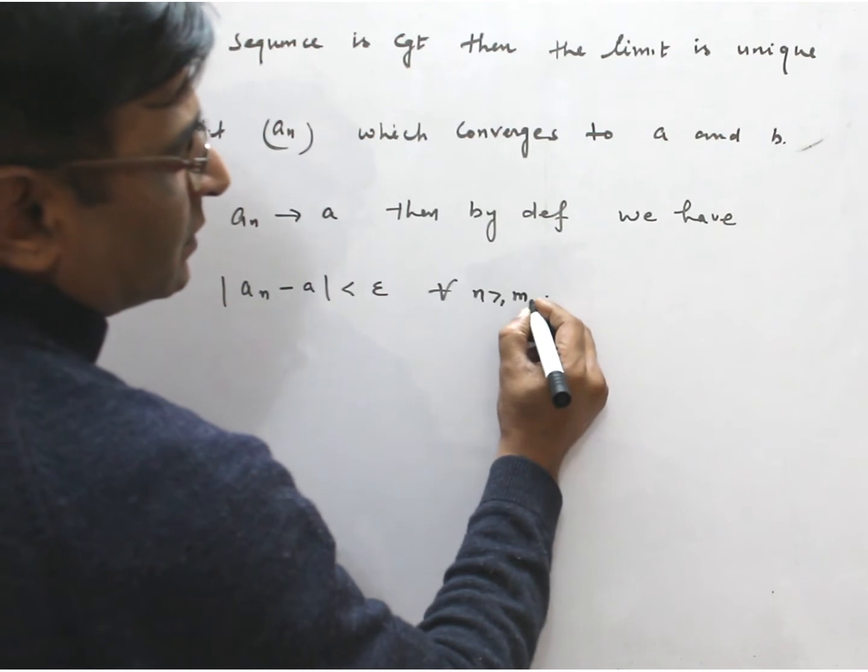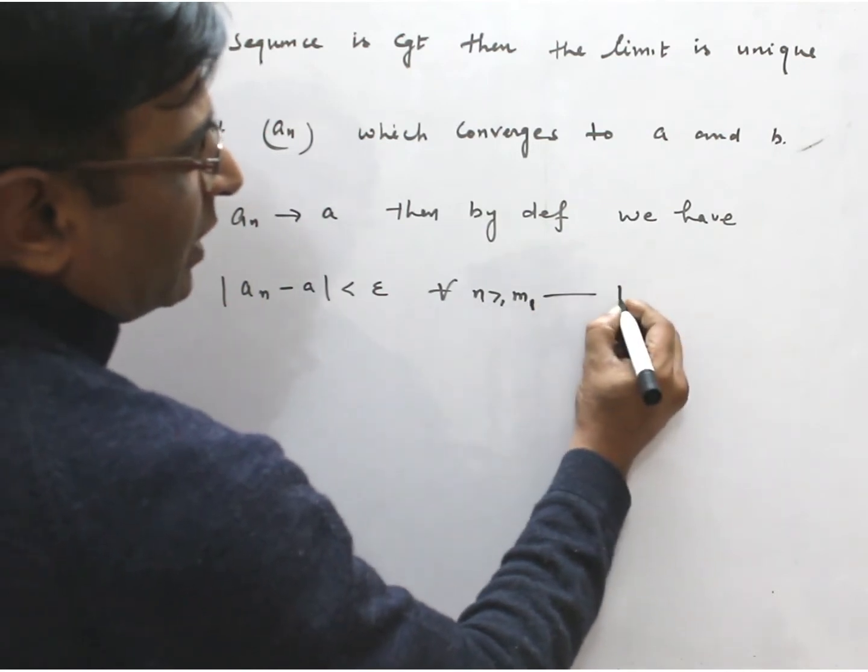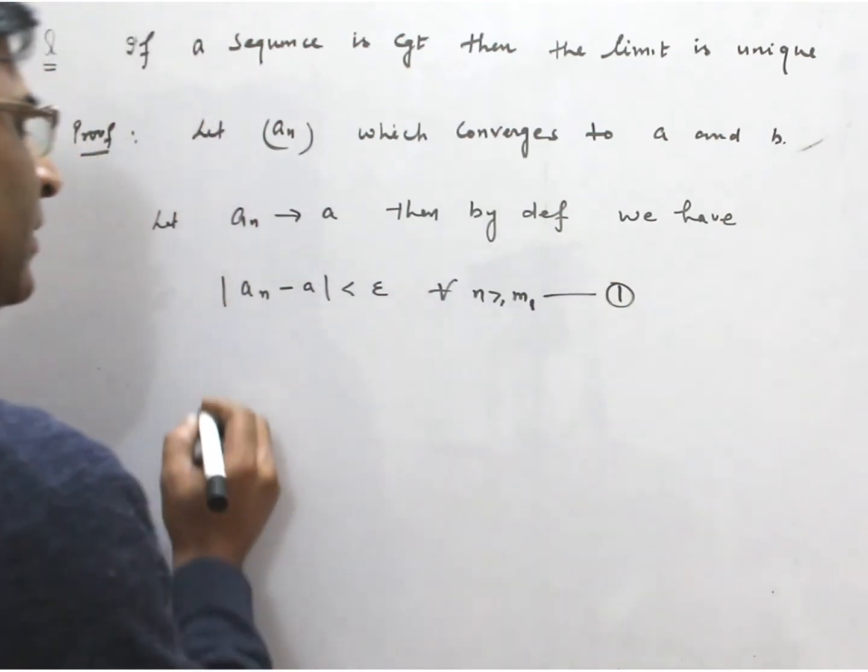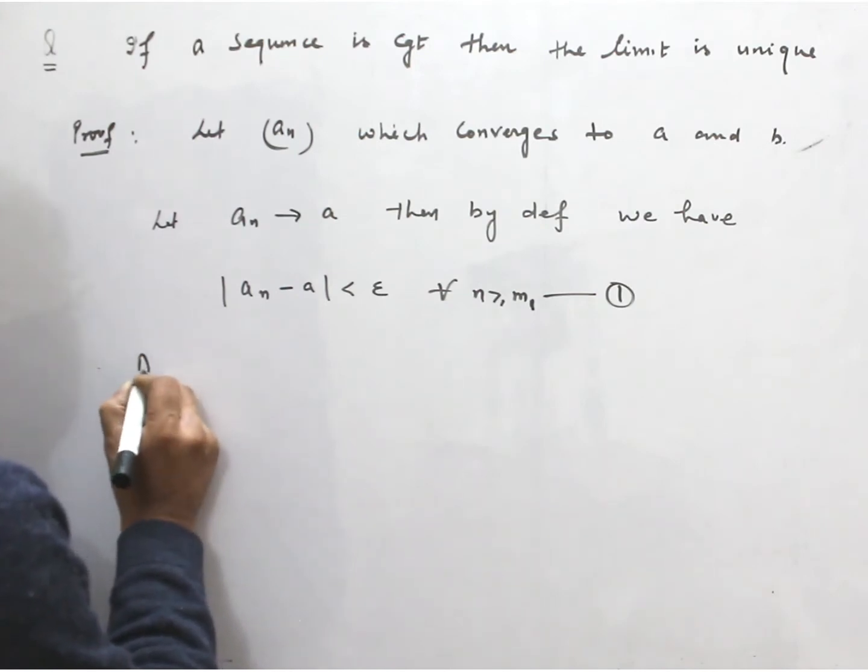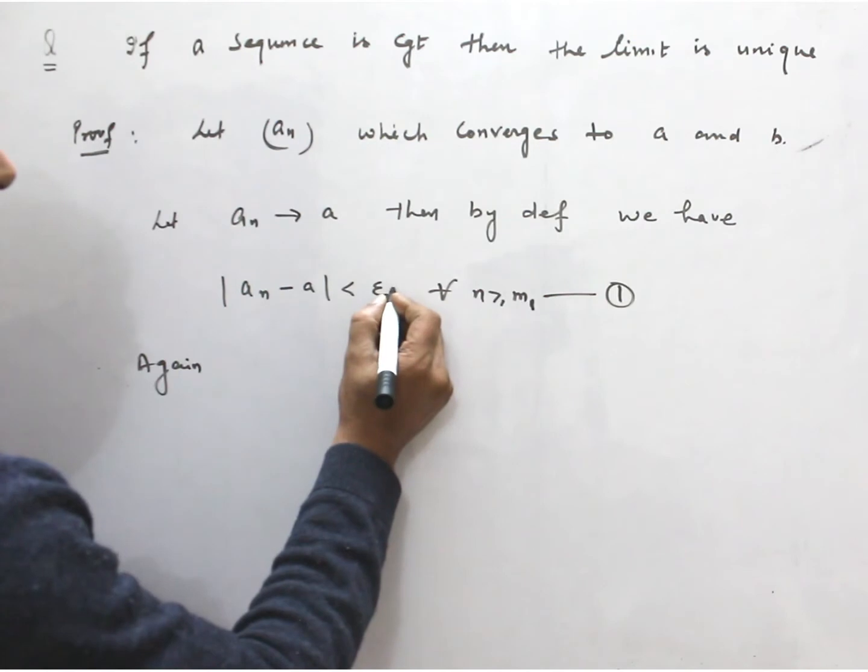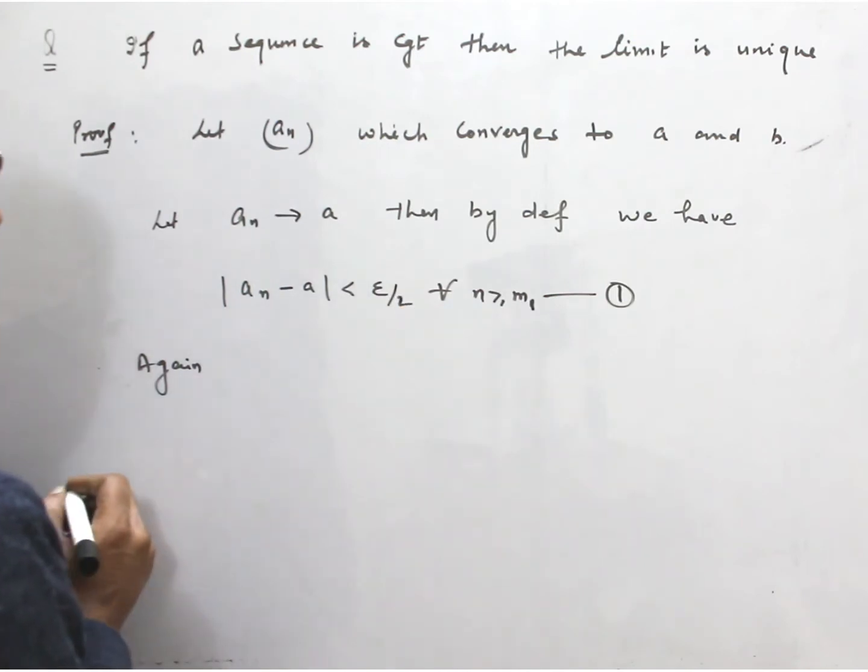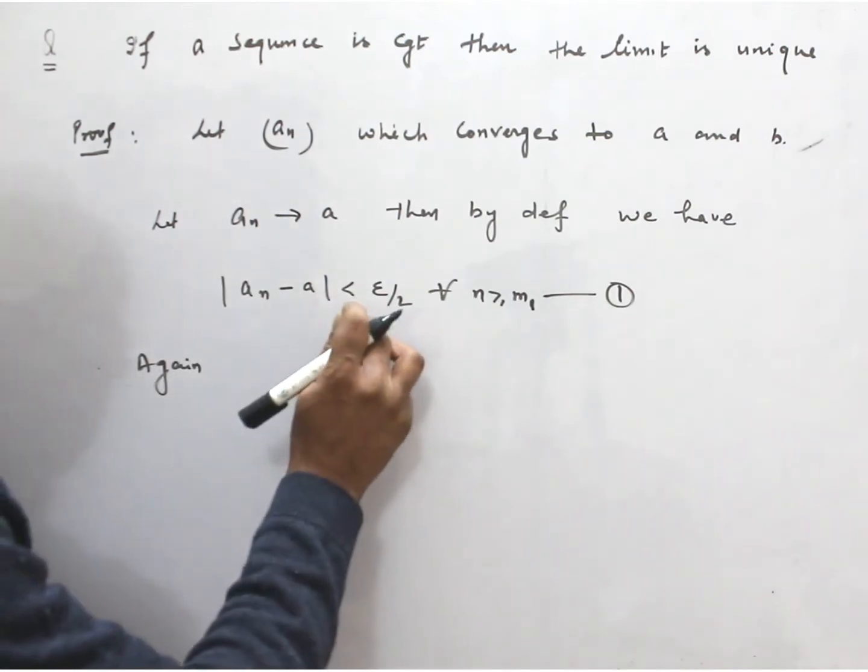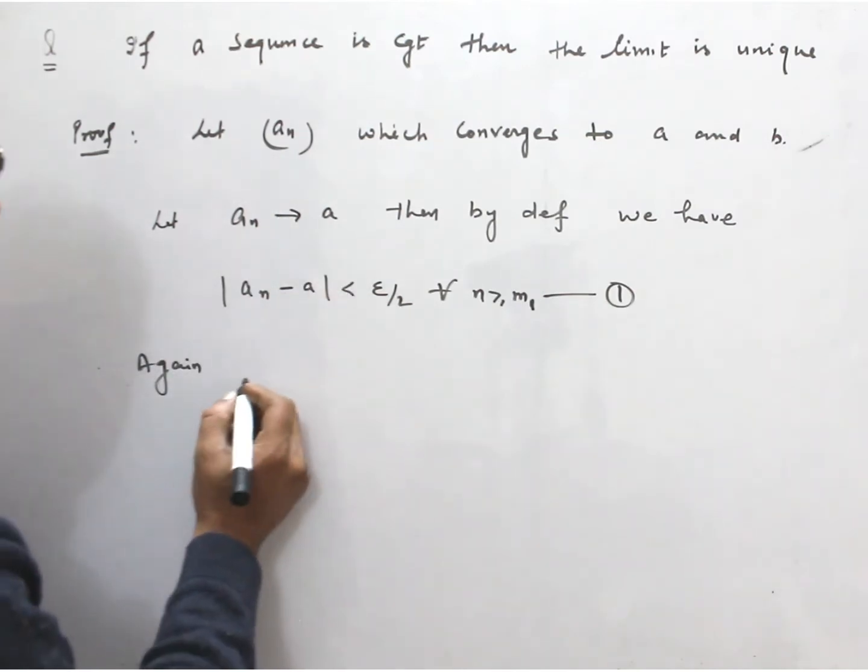This is m₁. I take equation 1. I take epsilon by 2. I will let you know why I divided epsilon by 2.